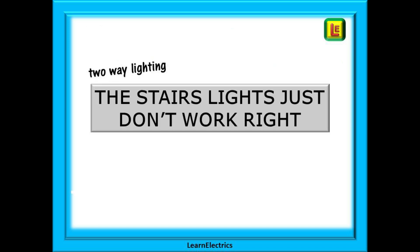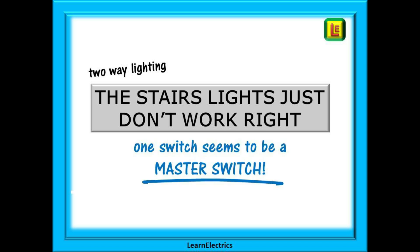A frequent problem with two-way lighting is found when the customer complains that the stair lights just don't seem to work right. And this also fools some electricians if they've not seen this before. I've had more than one customer tell me that it seems like one of the switches is a master switch. If we turn the light on from the bottom of the stairs it is possible to turn it off from upstairs. But if we turn the light on at the top of the stairs then we cannot turn it off at the bottom switch. We have to turn it off again at the top and then the bottom will work again.